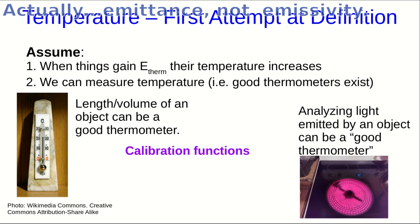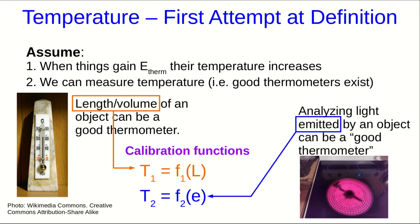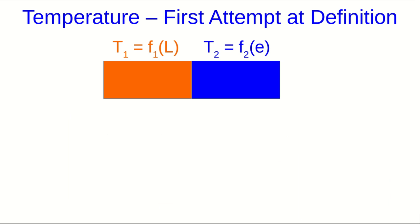So what we then need are calibration functions that allow us to convert those measurements of volume or of emissivity into a temperature. Whenever we have multiple ways to measure a quantity and different calibration functions that allow us to convert those measurements into the thing we're actually trying to measure, we always want to make sure that our calibration functions agree. In this case, we know exactly how to do this.